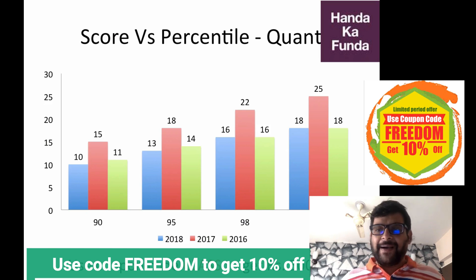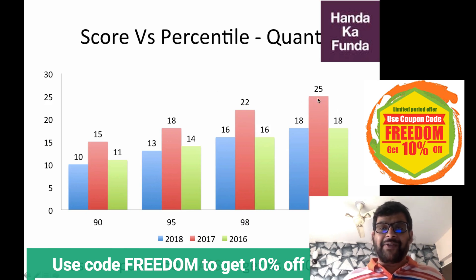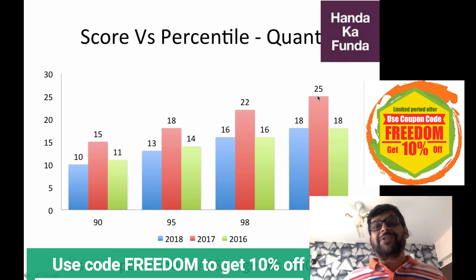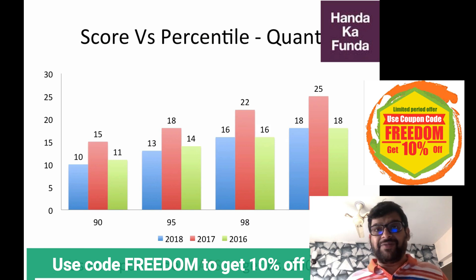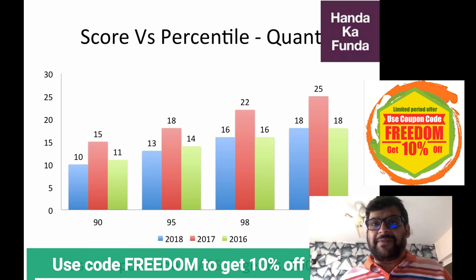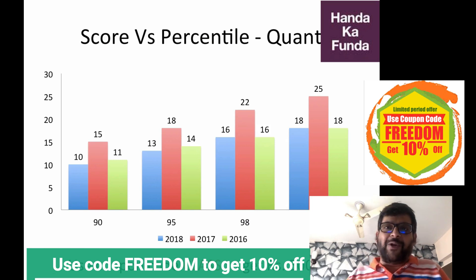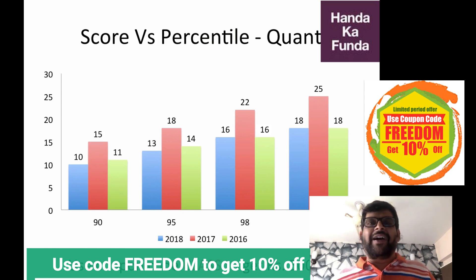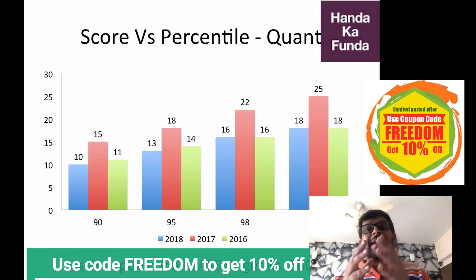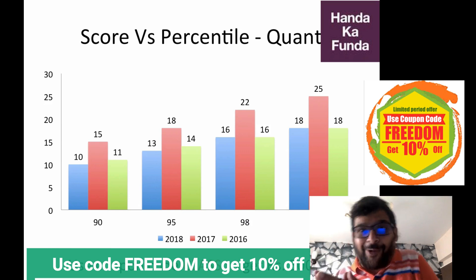For example, to get 99 percentile in CAT 2017, which was a really simple Quant paper, you needed to solve 25 questions out of 34 — which is a lot. You only have one hour, so this averages to a little around two minutes per question.